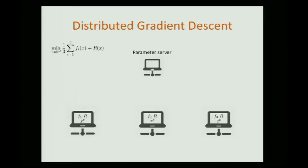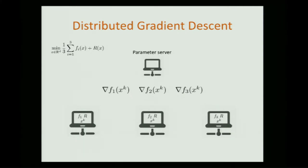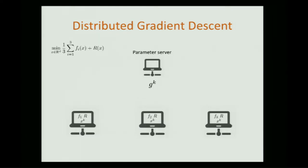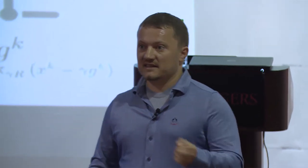In practice this is implemented through a parameter server setup. Every machine computes a gradient based on local data — gradient of F1 for machine 1, gradient of F2 for machine 2, and so on. These gradients are communicated to the parameter server, which is the expensive part. The server does simple averaging to compute the full gradient, sends it back, and then every machine can do the proximal gradient descent step. The difficulty is the communication: if D is large, we're sending huge D-dimensional vectors and we'd like to avoid this.